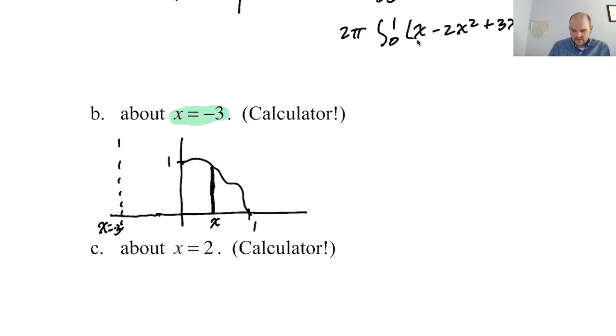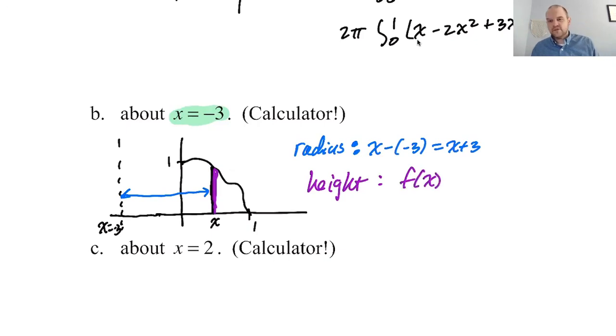And then our axis that we're going to revolve around is way out here at x = -3. So I'm going to draw in a radius. So the little sliver that we drew is to the right of the axis. So our radius is going to be right, take away left. So x - (-3), which is x + 3.